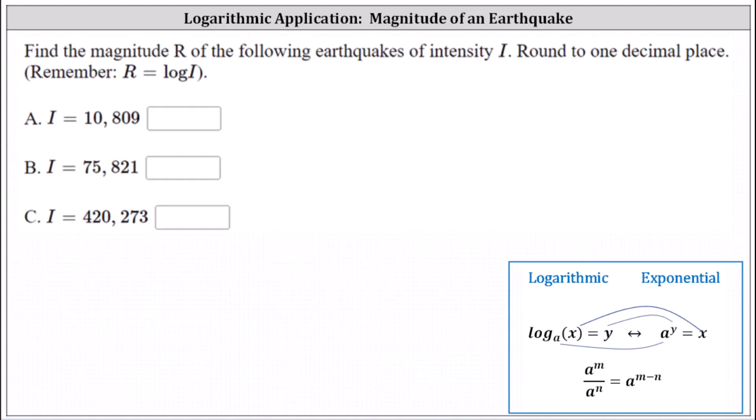Find the magnitude R of the following earthquakes of intensity I, round to one decimal place. Remember, R equals common log I.